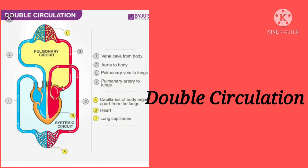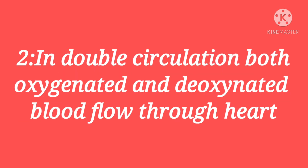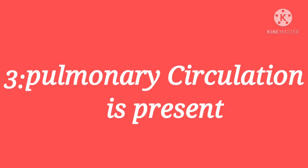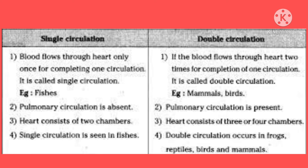Double circulation means flow of blood through the heart twice for completing one circulation. In double circulation, both oxygenated and deoxygenated blood flow through the heart. Pulmonary circulation is present in double circulation. Double circulation is seen in birds and mammals, and the heart contains four chambers.